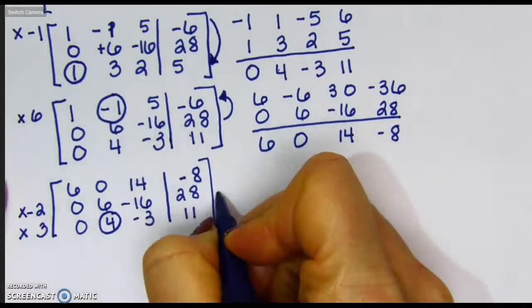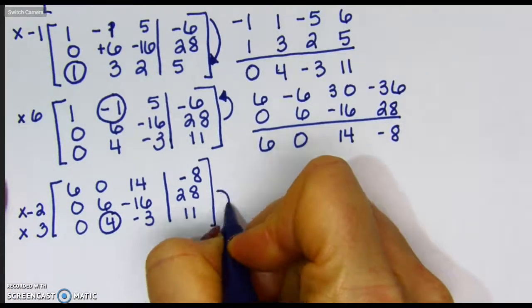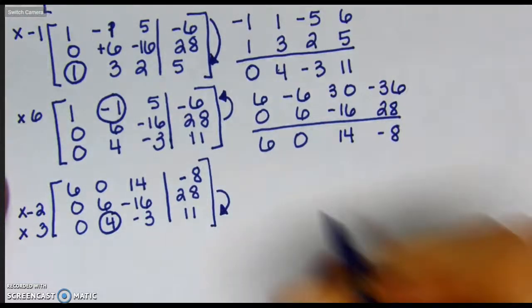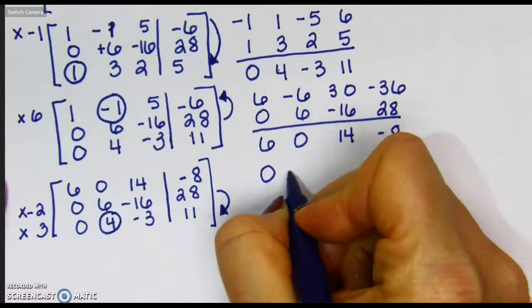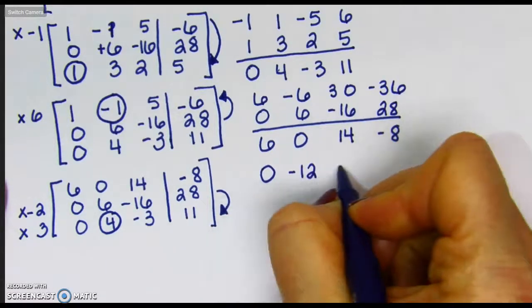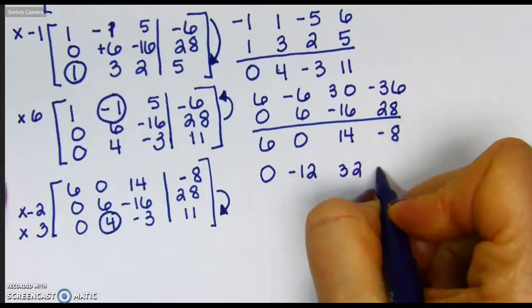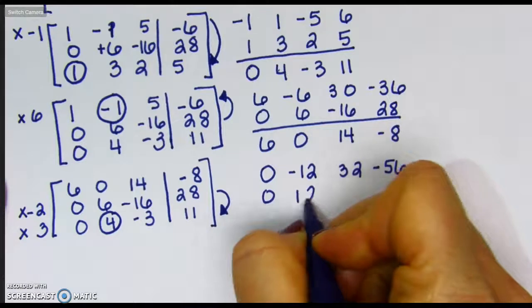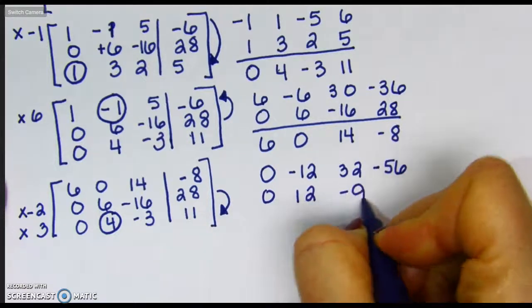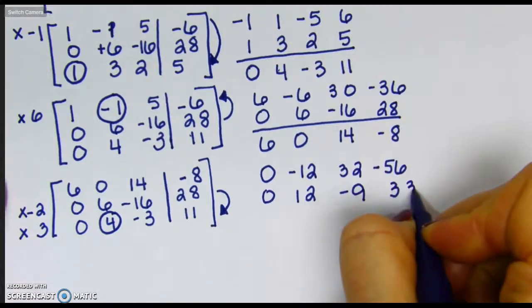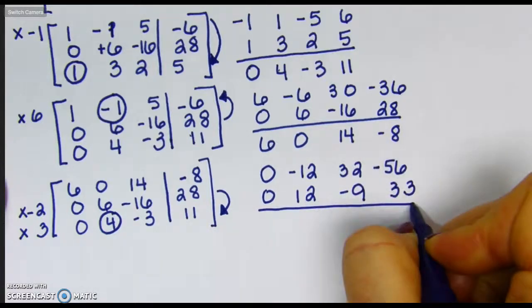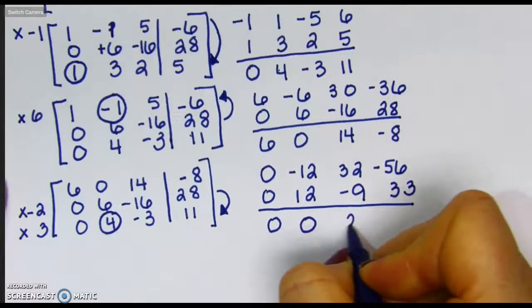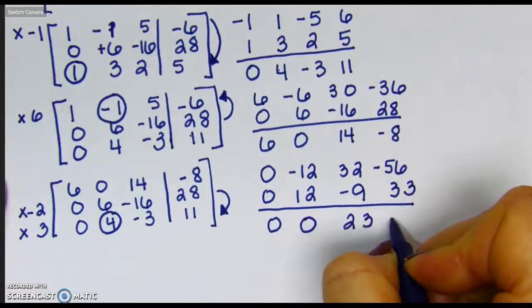And we're going to end up adding down because I want my 0 to be where that 4 position is. When I multiply by negative 2, and then I'll have 0, 12, negative 9, and 33. Adding I now have 0, 0, 23, and negative 23.